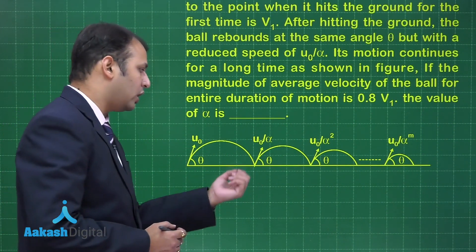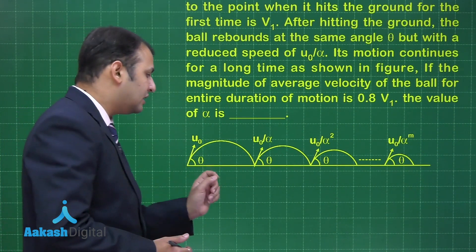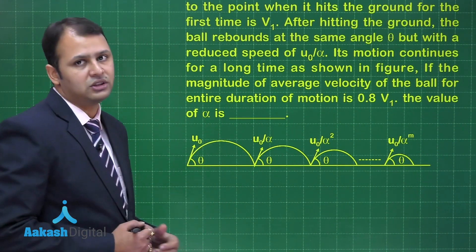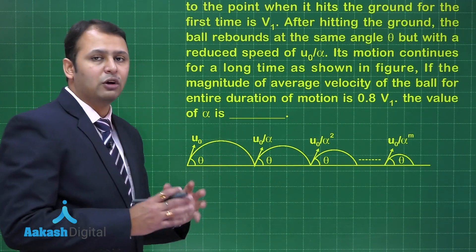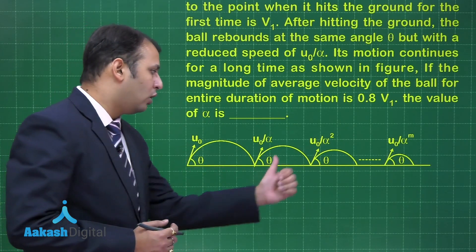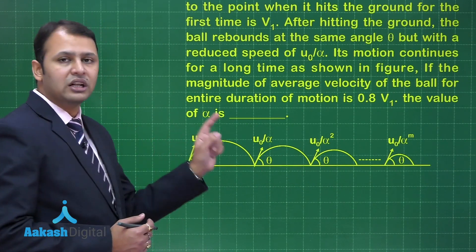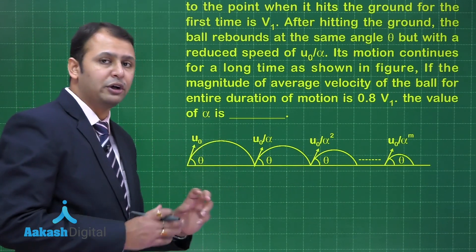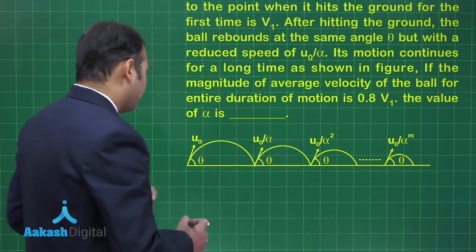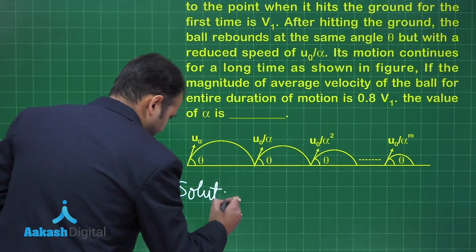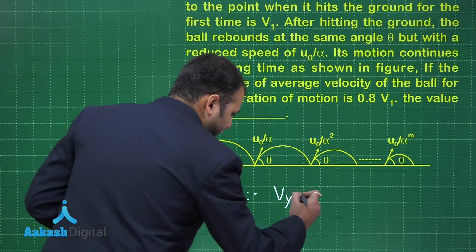As per the diagram, the ball is projected with u naught, hits the ground, and goes up again with the same angle but reduced speed. This happens because there is some loss of energy. Since the angle of projection always remains the same, there is an equal reduction in both the vertical and horizontal components of velocity, which is why their ratio always remains the same.